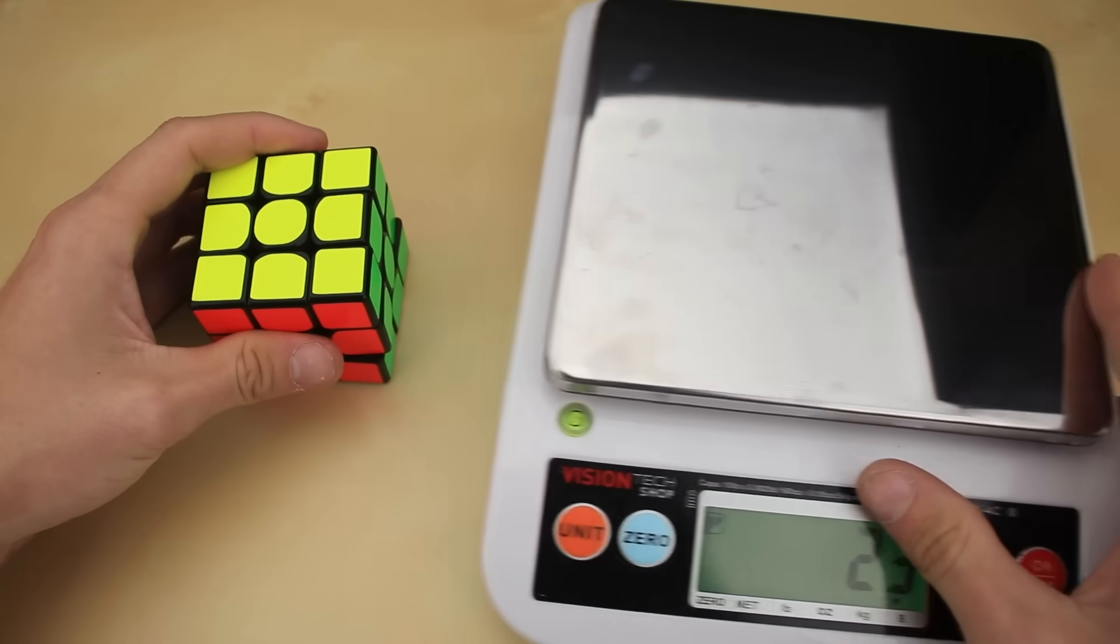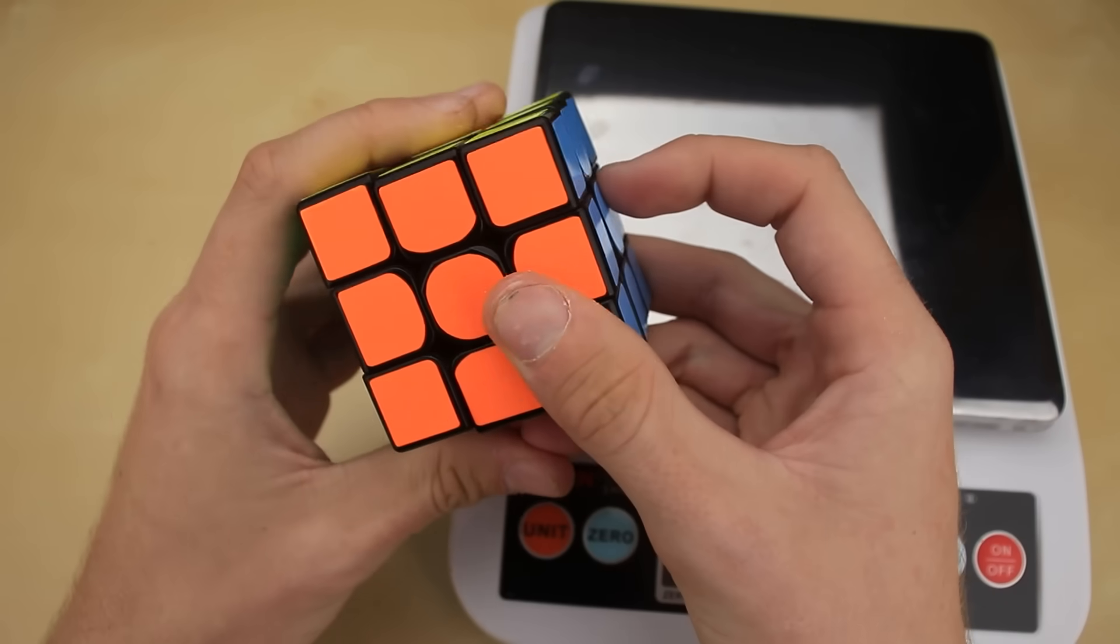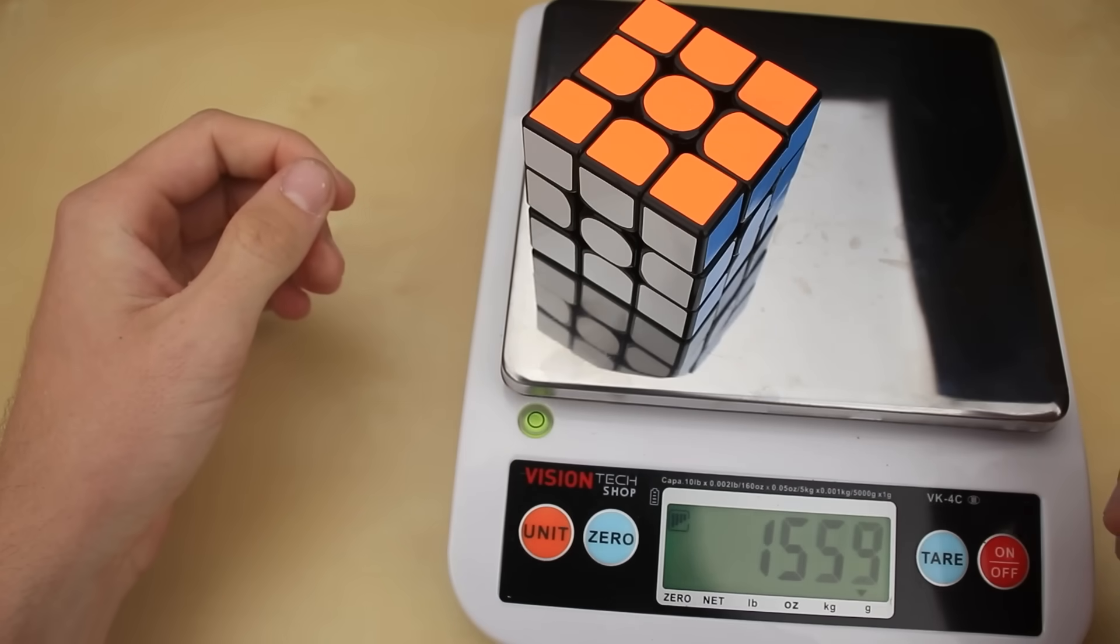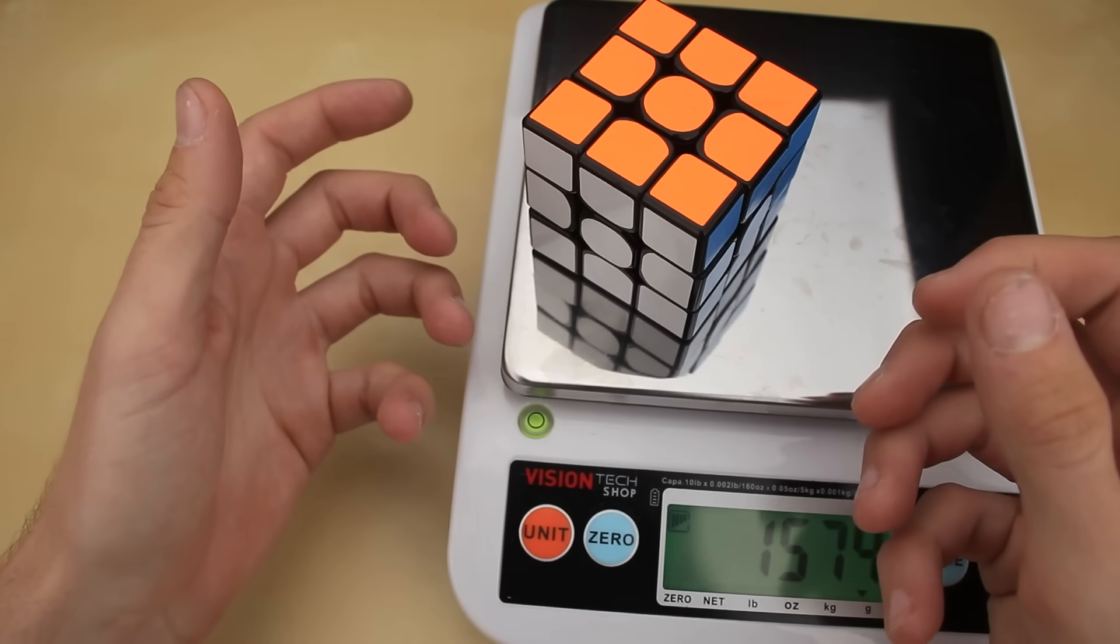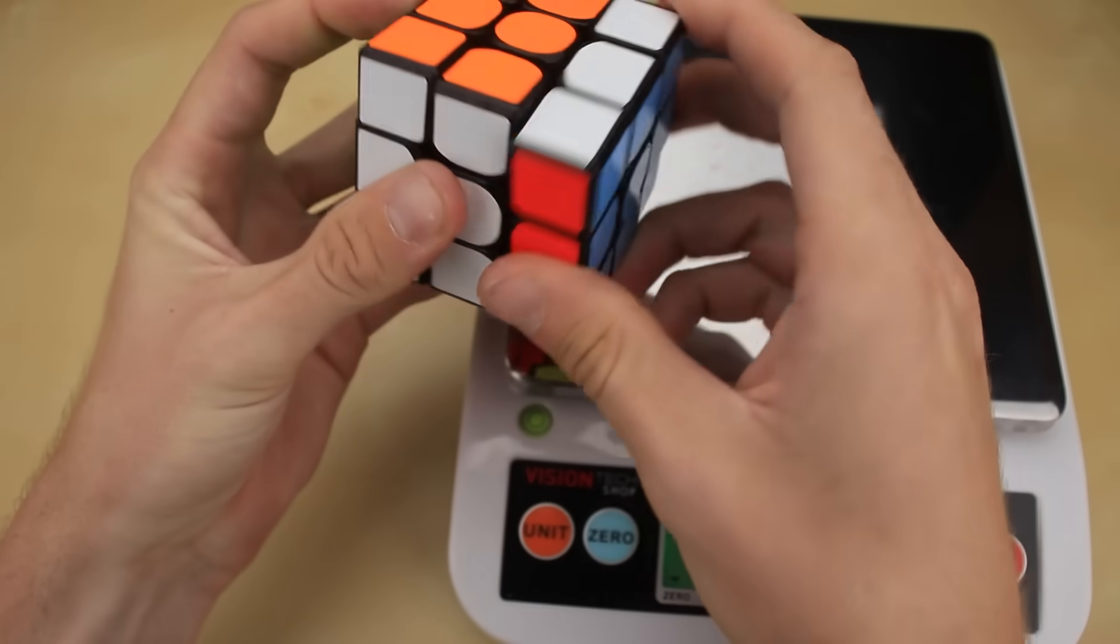But the real question is, just how heavy is the end result? Remember, the previous version of this cube was 953 grams, and the weight to beat is 1,400 grams. So let's set it on the scale. 1,574. So I would say that handily beats the record for the world's heaviest, standard-sized, fully-functional 3x3 Rubik's Cube.